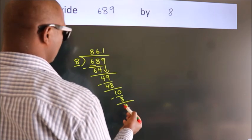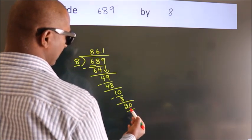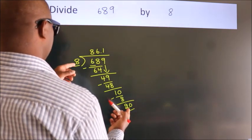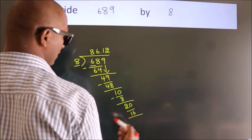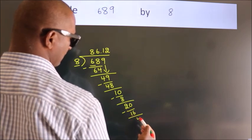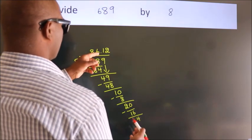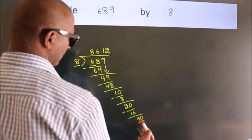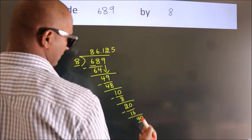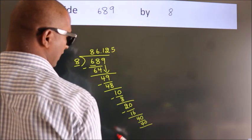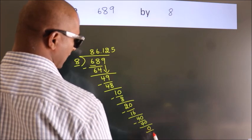After this, we already have the decimal, so directly take 0, making it 40. 40 in the 8 times table: 8 × 5 = 40. Now we subtract, and we get 0. Here we got remainder 0, so the division is complete.